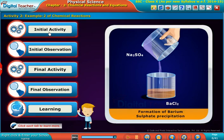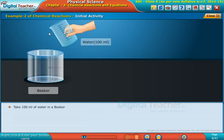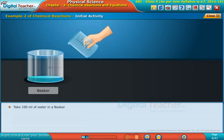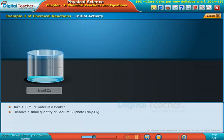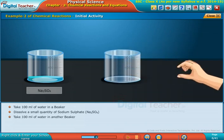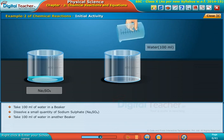Take 100 ml of water in a beaker. Dissolve a small quantity of sodium sulfate, Na2SO4.